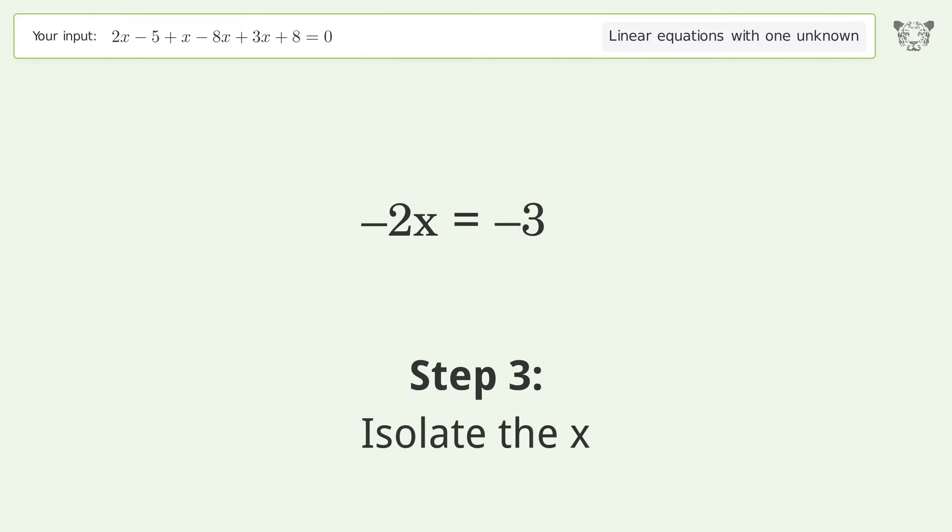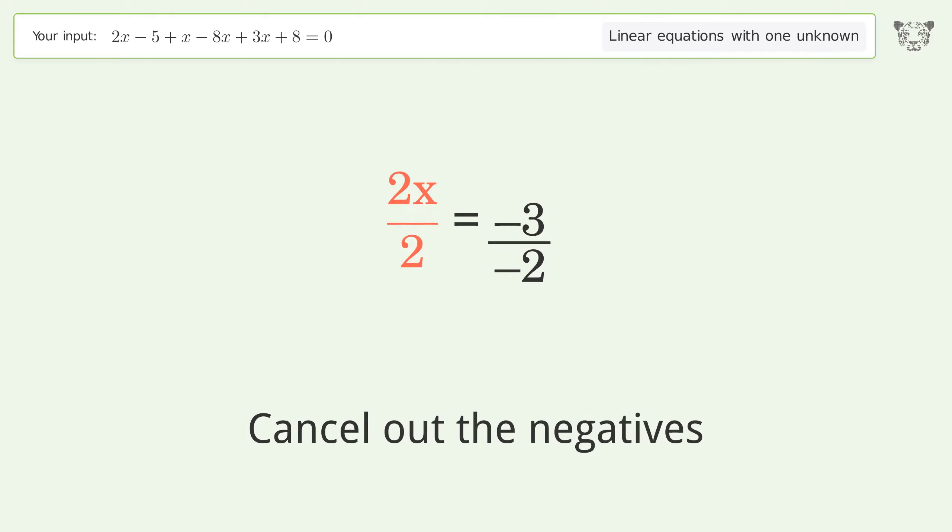Isolate the x. Divide both sides by negative 2. Cancel out the negatives. Simplify the fraction.